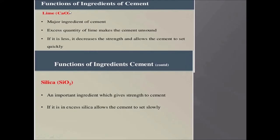Let's see the functions of ingredients of cement. Lime is the major ingredient of cement and excess quantity of lime makes the cement unsound — unsound means the cement will expand. If lime is less, it decreases the strength and allows the cement to set quickly. The next component is silica, which is an important ingredient that gives strength to cement.